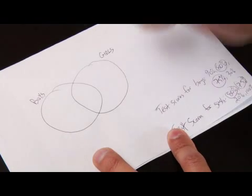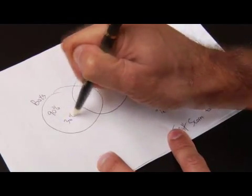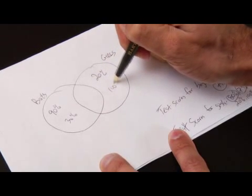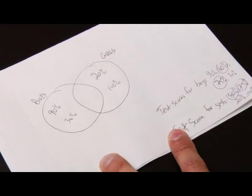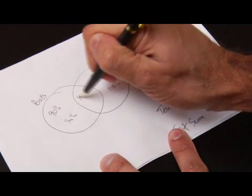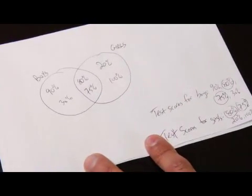So for boys, we'll put 90 and 30 percent on the boys section. And for the girls section, we'll put 20 percent and 100 percent on the girls section. And what they have in common is 80 percent and 75 percent. So we have 80 percent and we have 75 percent, which are common for both boys and girls.